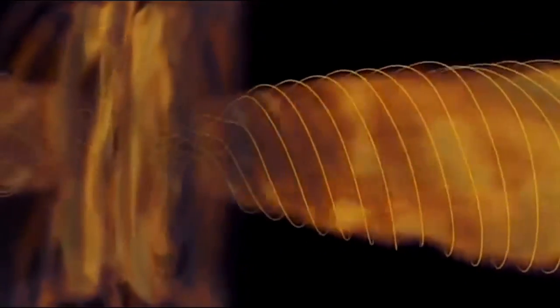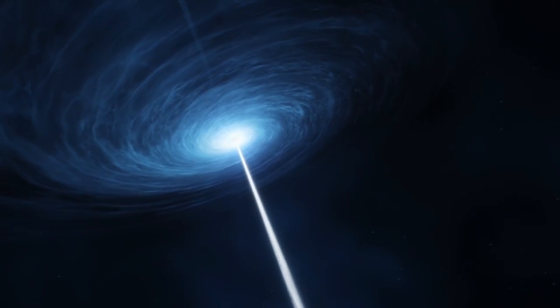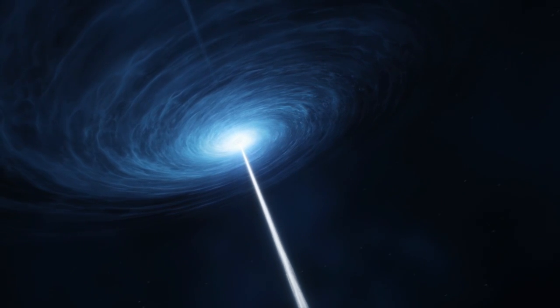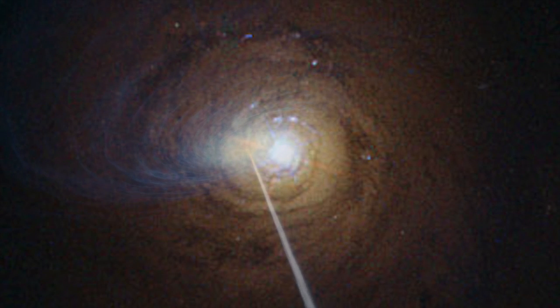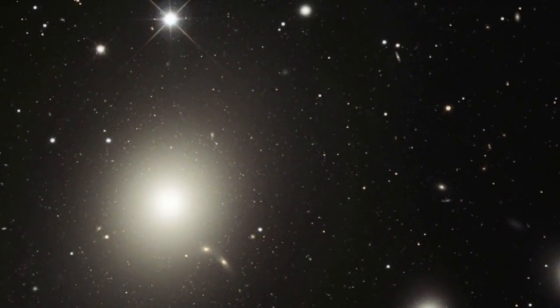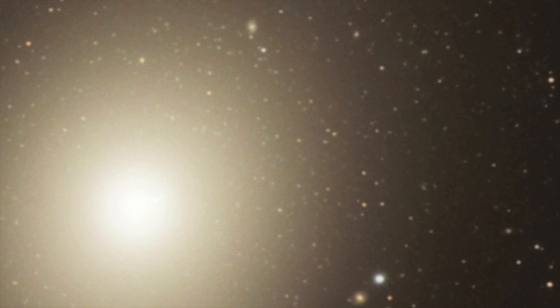These black holes were the size of stars, roughly 30 to 100 times the mass of our Sun. Later, we saw powerful gamma ray jets from the violently active centers of galaxies created as entire stars fell victim to supermassive black holes millions of times larger than the Sun.